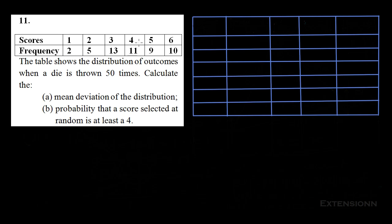Here we have a table of scores and frequencies. The question says the table shows the distribution of outcomes when a die is rolled 50 times. We need to calculate the mean deviation of the distribution and the probability that a score selected at random is at least a 4.